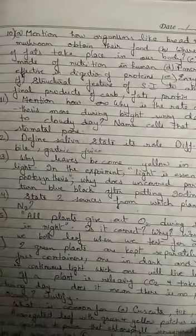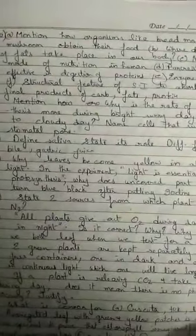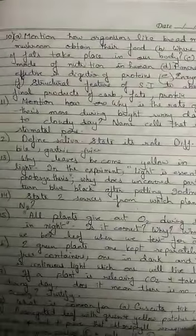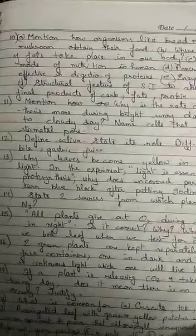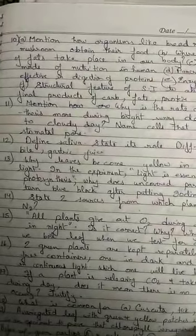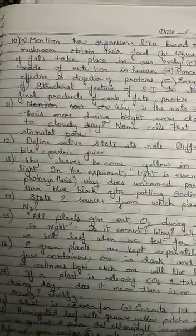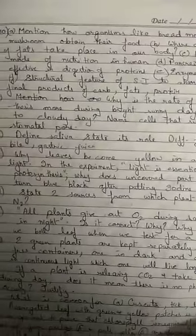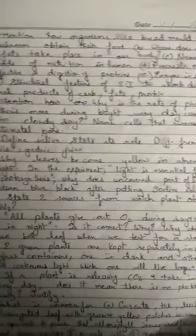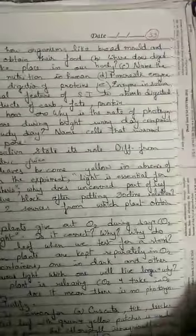Part B: where does digestion of fats take place in our body? Digestion of fats starts in the small intestine. Next: what is the mode of nutrition in humans? It is holozoic mode of nutrition.